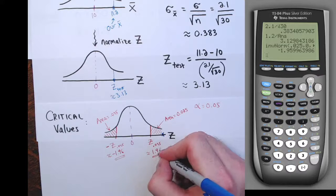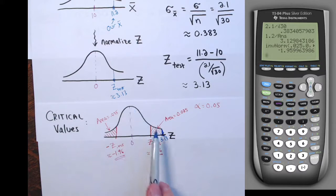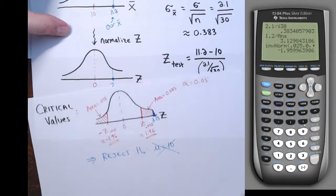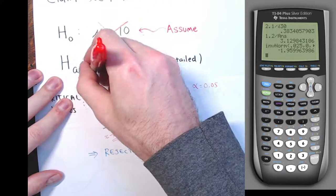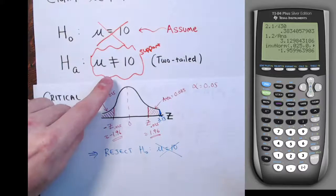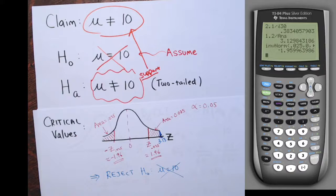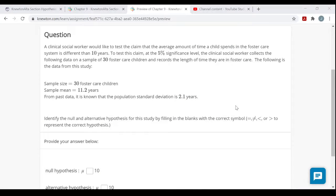Since the test statistic falls in the rejection region, we reject the null hypothesis that the mean equals 10 years. Rejecting the null means we support the alternative hypothesis — and the alternative was the claim. The evidence supports the claim that the average number of years a child spends in foster care is different from 10. These are the same steps performed every single time you run a hypothesis test.